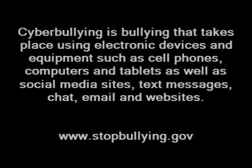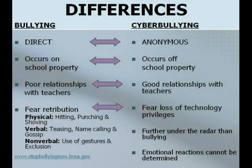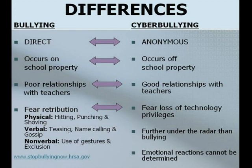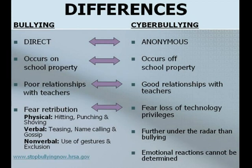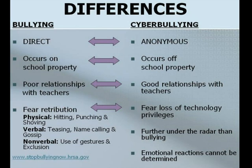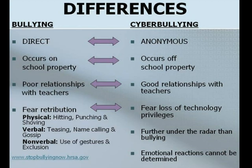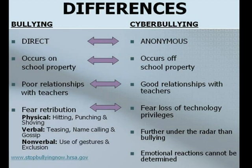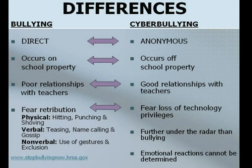There are differences between physical bullying and cyberbullying. In physical bullying, the individual knows the bully, it occurs on school property, and the individual may have poor relationships with teachers. They also fear retribution which could be physical, verbal, and nonverbal. In cyberbullying, the bully could remain anonymous, it can occur off school property, and the individual can maintain good relationships with teachers. There is a fear of loss of technology privileges, the bullying may go unnoticed, and emotional reactions may not be determined by anyone.